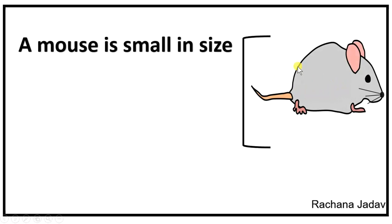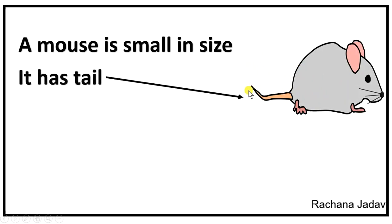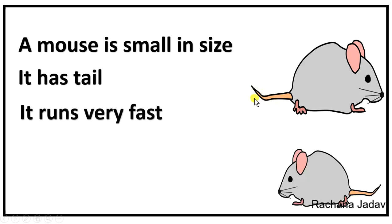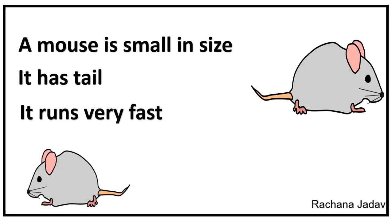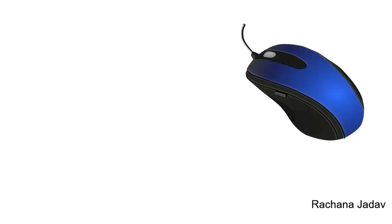Right, so it is very small in size, very tiny, and with that it has a tail. And with that it runs very fast. You can see how fast, right?